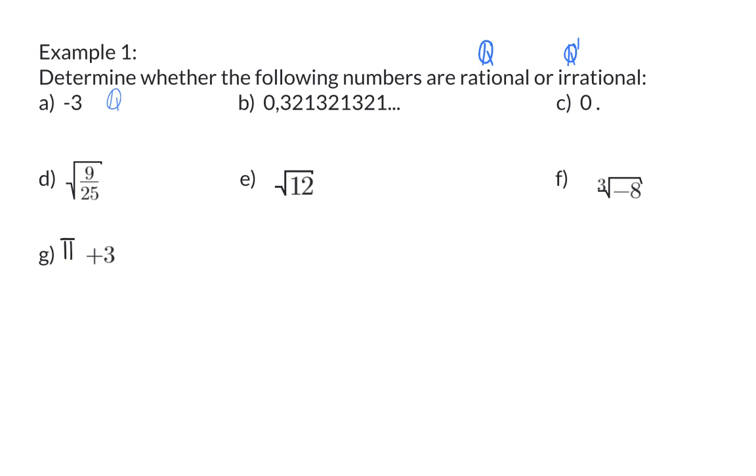In question B, we have the numbers 3, 2, 1 that repeats itself and therefore this is a recurring decimal and that will be classified as a rational number. 0 is also a rational number.